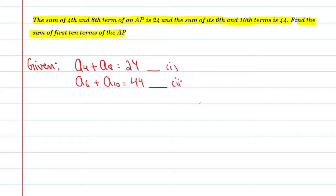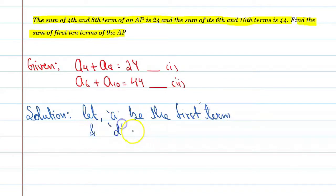Now start the solution. First of all, let A be the first term and small d be the common difference.